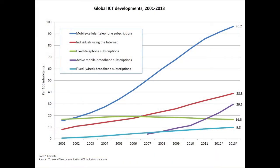The ITU is a very important source of statistics in all matters related to information and communication technologies. Especially where developing countries are concerned, this is probably the only reliable source at that level. Here is a figure from the ITU — a graph showing trends all over the world, an aggregated trend reported in terms of tele-density, meaning number of telephones per 100 inhabitants. What you find is that the blue line on top shows tele-density increased in terms of mobile telephones from about 15 in 2001 to about 96 in 2013 — a very rapid increase.